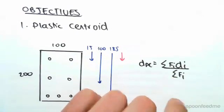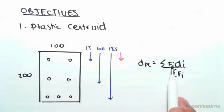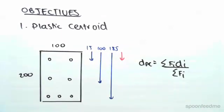So it's quite similar to the centroid you're normally used to, but instead of the area, so you're used to seeing A times D over the sum of A, we're doing the sum of the forces times the distance over the sum of the force, okay? So it's pretty similar, we're just doing forces.